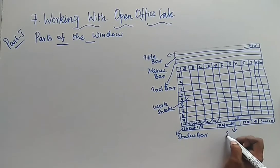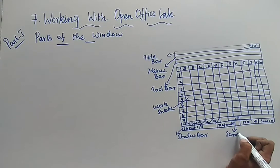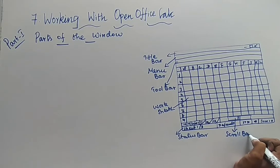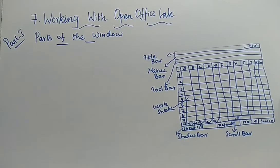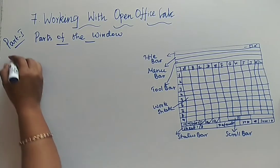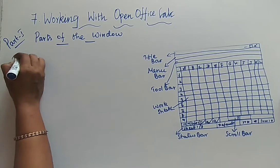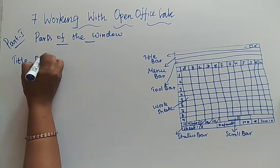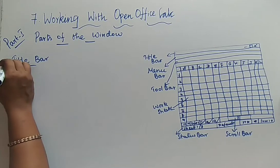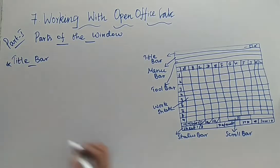Here you are going to have the scroll bar. So these are the parts of the OpenOffice Calc window. First we can see the first bar — that is nothing but your title bar. By the name itself you can understand. What is the title bar? It is going to display the title of the document — that is your spreadsheet.